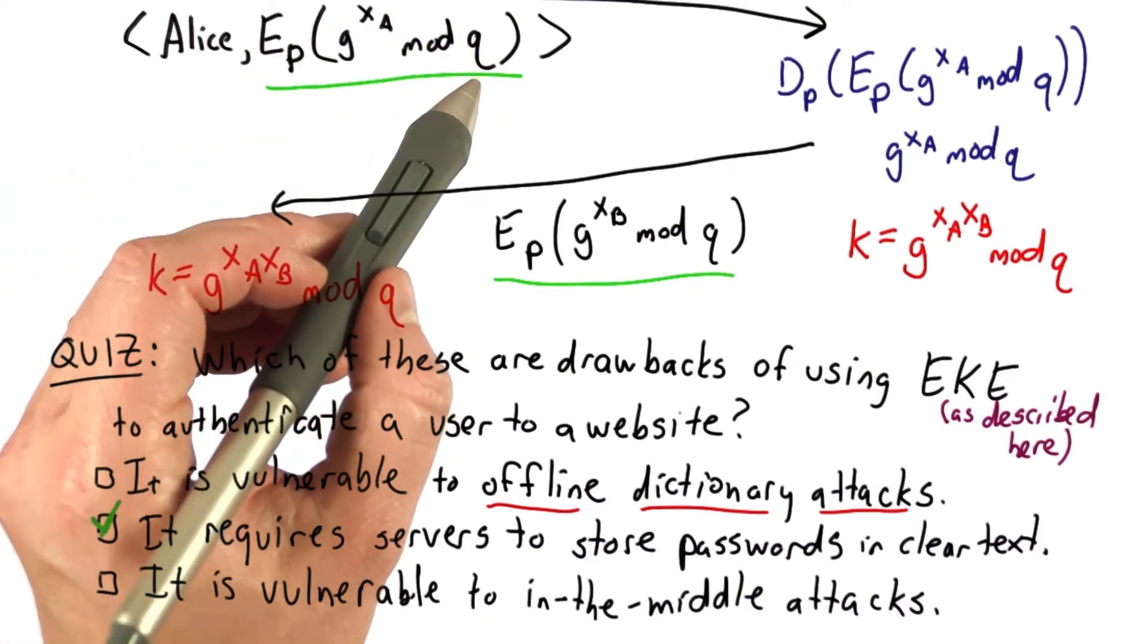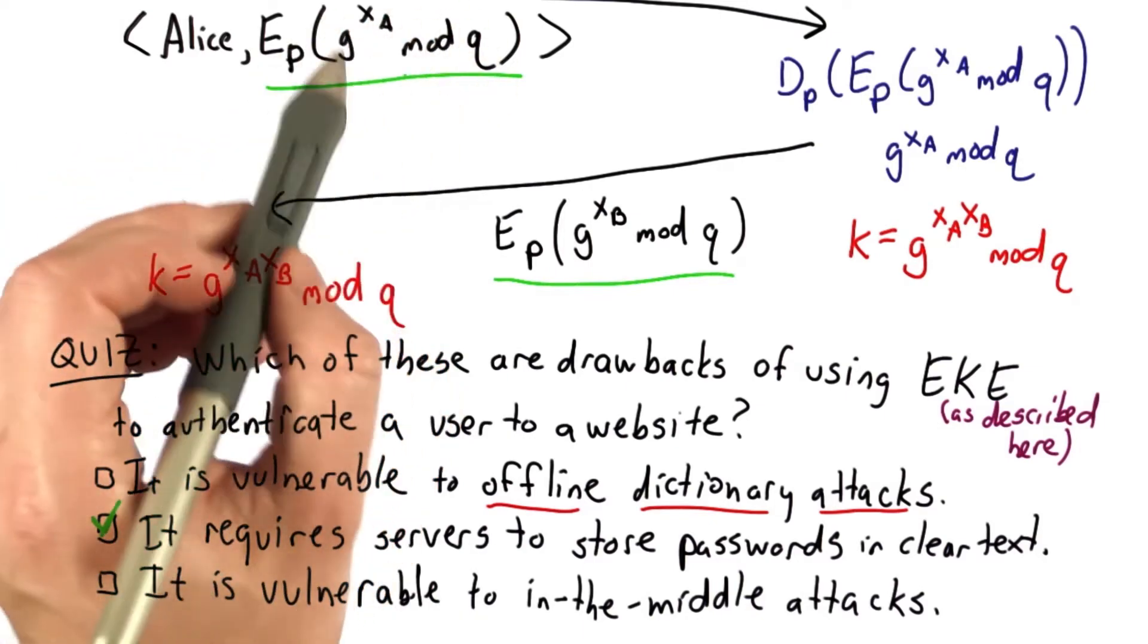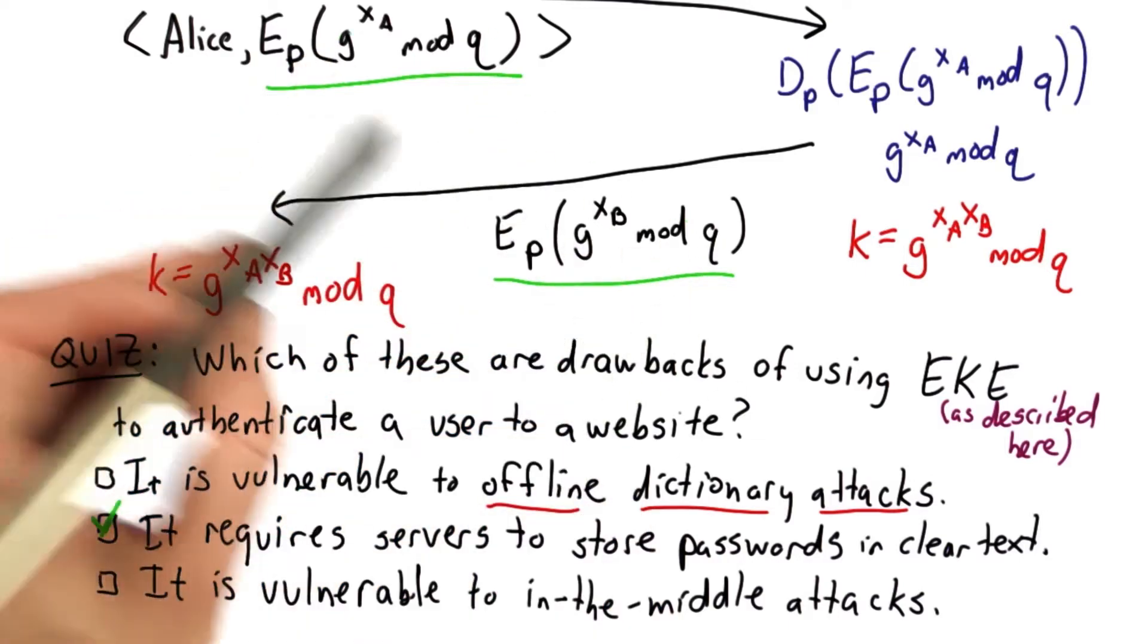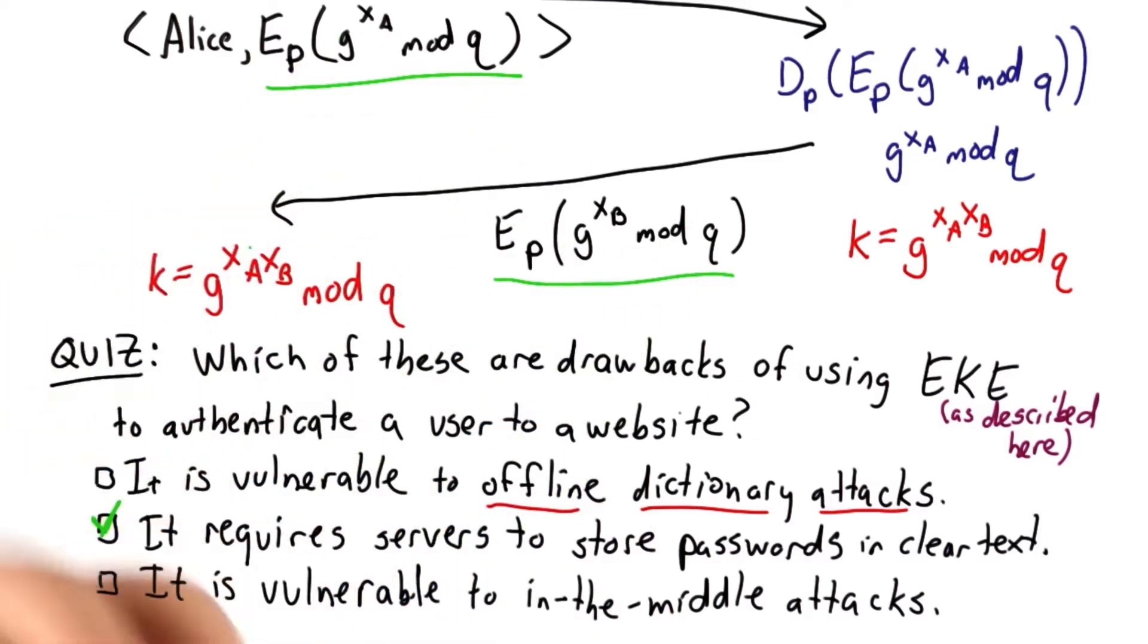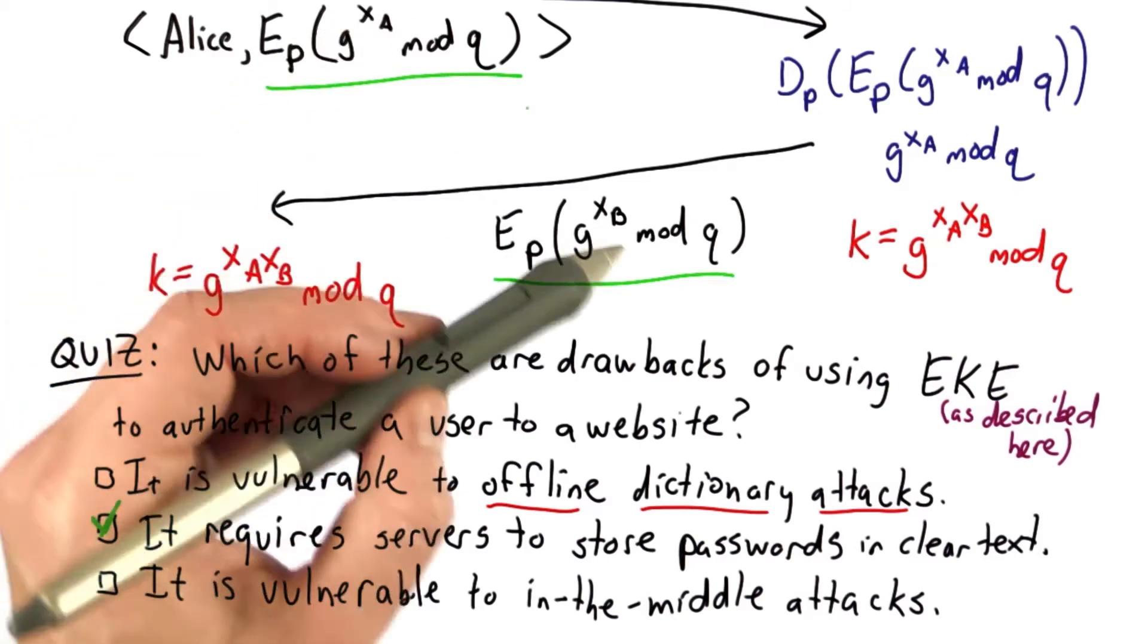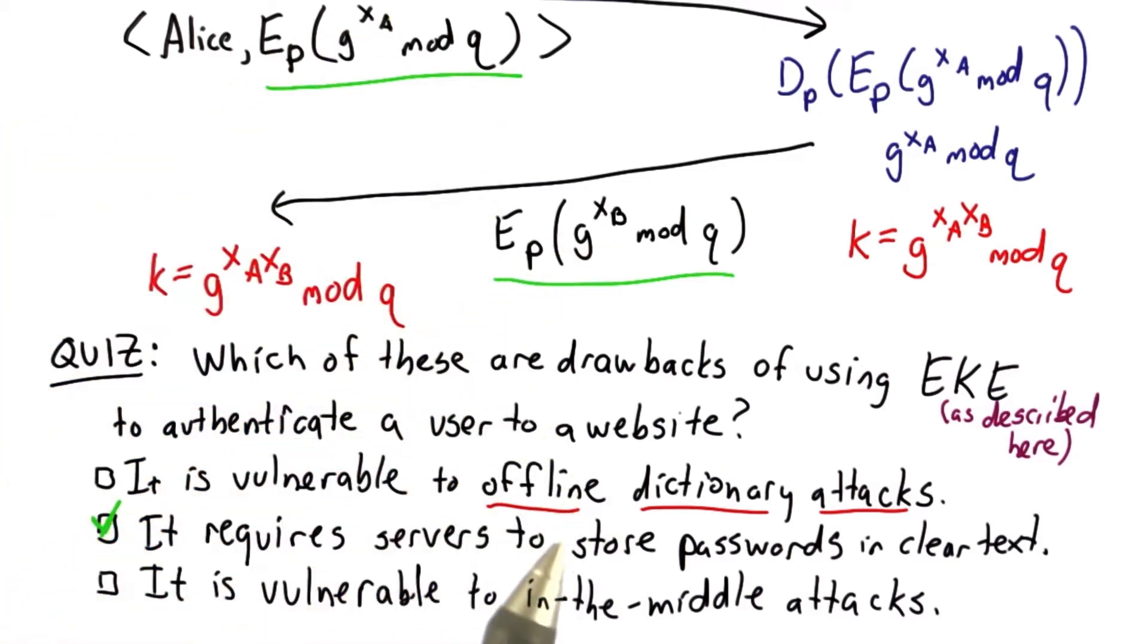The attacker obtains the encrypted messages, which are these Diffie-Hellman exponentials. From those, there's no way to obtain the key, so there's no way to know if the guess was correct, and it should be indistinguishable from any other guess.